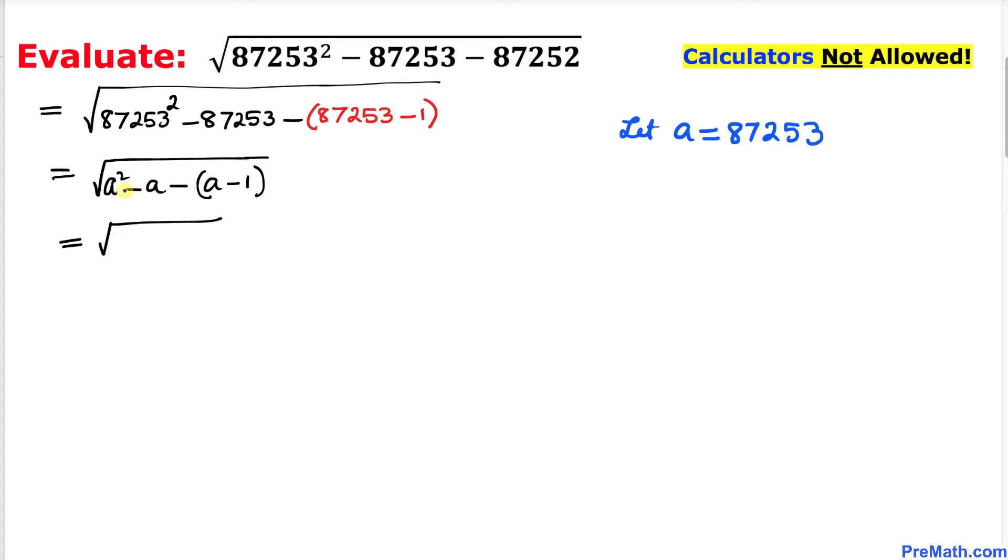This could be written as a squared minus a. Here let's go ahead and distribute this negative sign, so that's going to give us negative a and then plus 1. And here in this next step I have combined these two like terms: negative a and negative a is going to give us negative 2a.